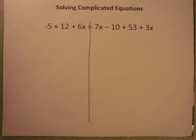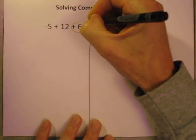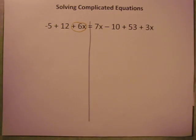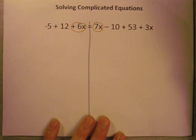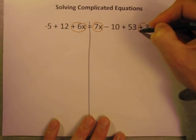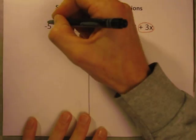So step one is we're going to combine like terms. First let's identify the like terms. Anything with an x in it would be like terms. So here is a 6x there, on the right side there is a positive 7x, and way over there is a positive 3x.